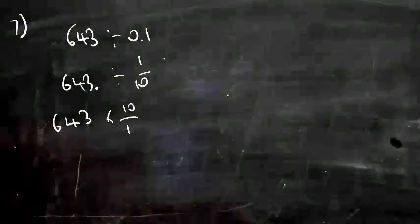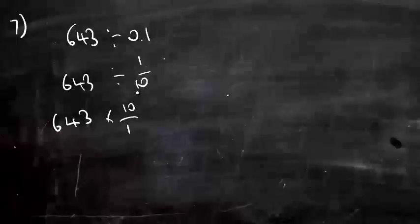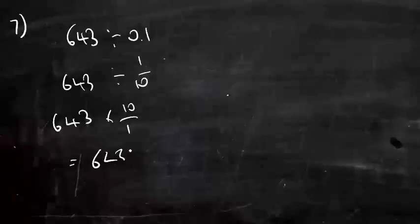This is a basic arithmetic question. If you're ever dividing by a fraction flip the fraction first and we get 643 times 10 divided by 1, which is 6430.